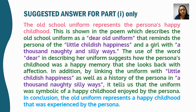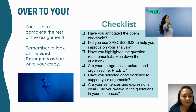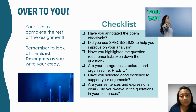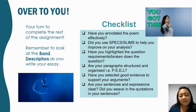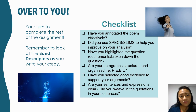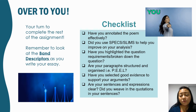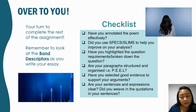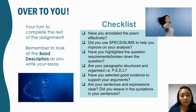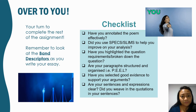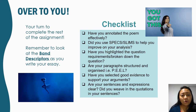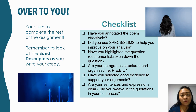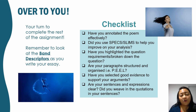Pause here to copy this. This is for you to copy, but the second paragraph and the second question you must do by yourself. It's your turn to complete the rest of the assignment. Remember to look at the band descriptors from earlier in this video and look at this checklist: have you annotated the poem effectively? Did you use SPECS and SLIMS for deeper understanding? Have you highlighted the question requirements? Are your paragraphs structured with PEEL? Have you selected good evidence? Are your sentences and expressions clear? Have you woven quotations into your sentences to ensure proper flow of reading?